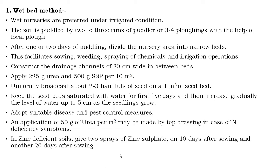This method requires puddling operations, which can be carried out with the help of a puddler. After that, the nursery area can be divided into narrow beds to easily facilitate operations such as sowing, weeding, and spraying of chemicals as well as irrigation operations. Drainage channels should be made for removal of excess water. As per the recommended dose, urea and SSP should be applied. Control measures against pests and diseases should be followed in the nursery, and specific nutrients should be applied to address deficiencies, including use of micronutrients.